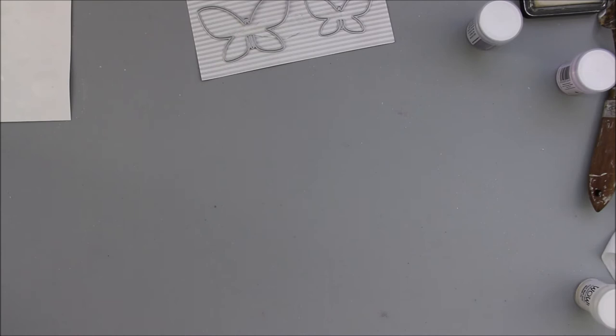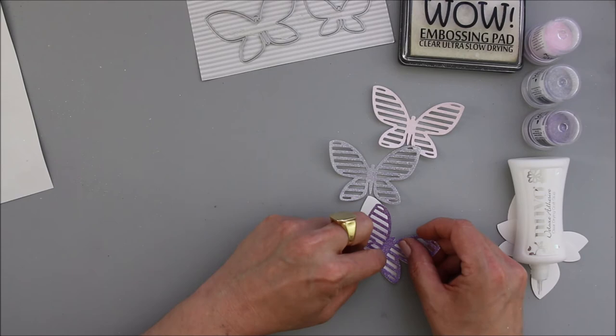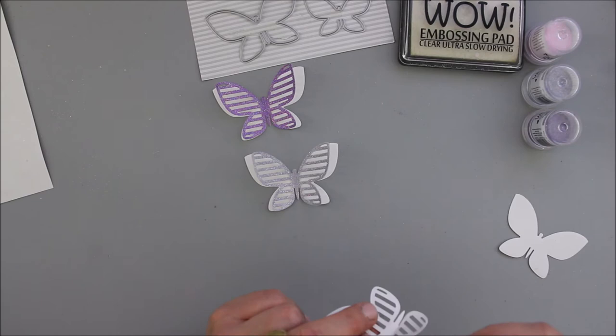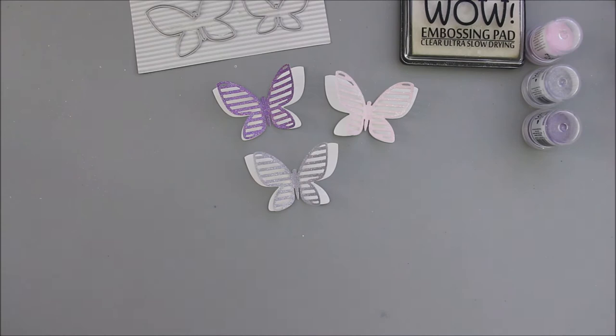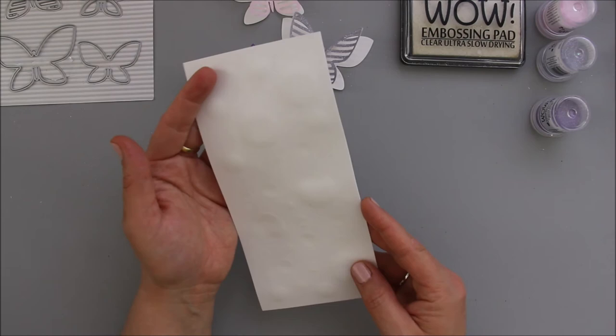Since I didn't like the coverage of the colors, I made a second layer of heat embossing on my already cut butterflies by just pressing the butterflies into my ink pad and again pouring the embossing powder over them, tapping it off, and heat setting. Now I'm ready to assemble my butterflies. This die offers a solid body and an intricate overlay to each butterfly, which I totally love because you can make them even more dimensional.